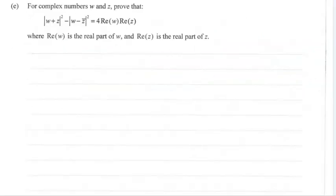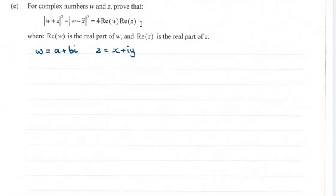Alright, and now for the excellence question from question 1, which I think is not actually too tricky — you should all be giving these a go. We've got this situation: W and z are complex numbers, and we want to show that this is true. Let's start off by writing w as a complex number with the real and complex parts separated — w as a plus bi, and z as x plus iy.